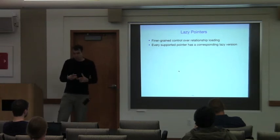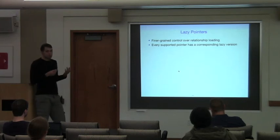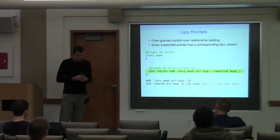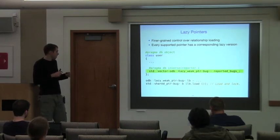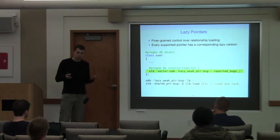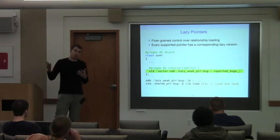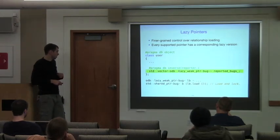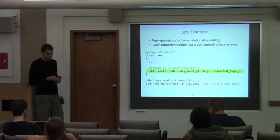The ODB answer to this problem is lazy pointers. Lazy pointers provide finer-grain control over relationship loading. For all the smart pointers mentioned earlier, ODB provides lazy versions. The lazy weak version, in addition to the interface exposed by the weak pointer, adds extra functions such as load(), which we can use to load the pointed-to object when and if necessary. Going back to our example, when we load our bug report, the user object pointer won't be loaded automatically — but if we need it, we can load it explicitly.